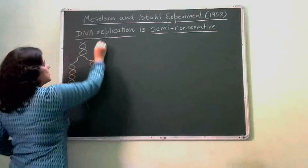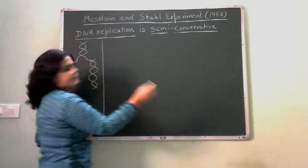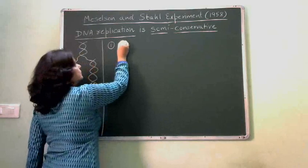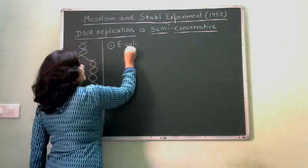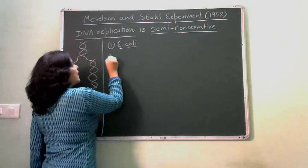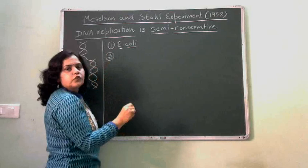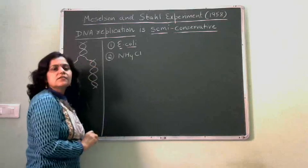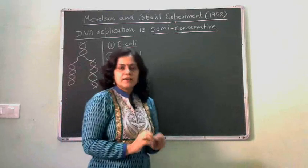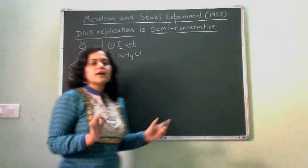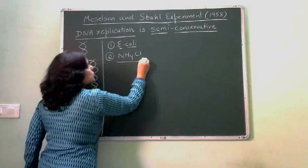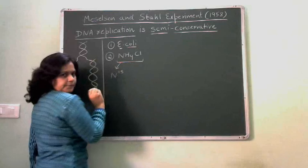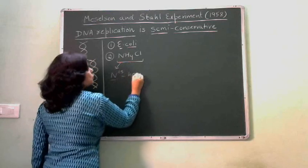So let's start with this experiment. The things used here: first, they have taken E. coli bacteria. Number two, they have taken the food for this E. coli, which is ammonium chloride — NH4Cl. This is the food. Now, what was special about this food? The nitrogen in this food was N15 nitrogen — a heavy isotope of nitrogen.